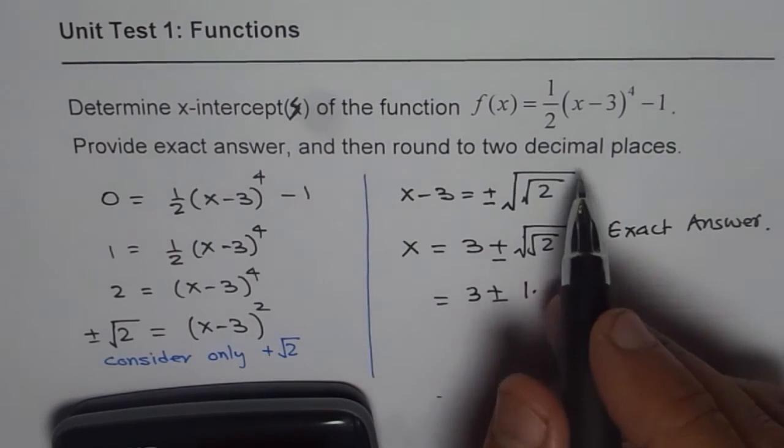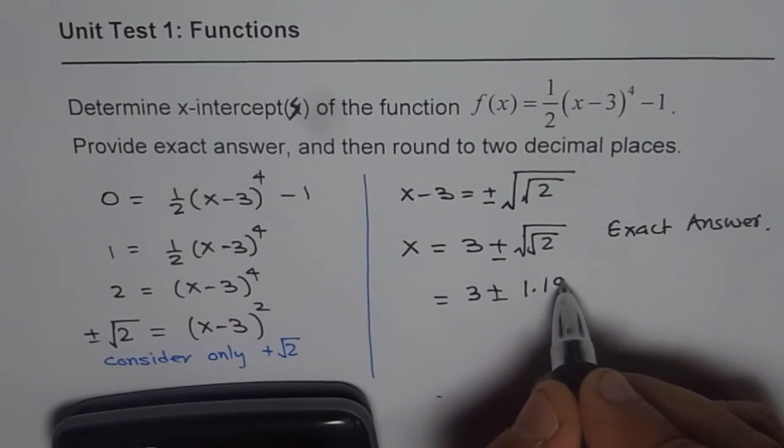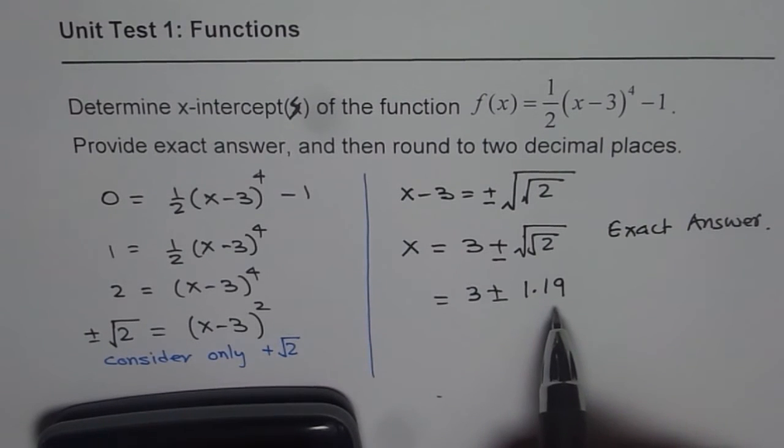we can write 3 plus or minus 1.189. We need to round it two decimal places. Let us straight away round this to 1.19. So that gives us two different answers.